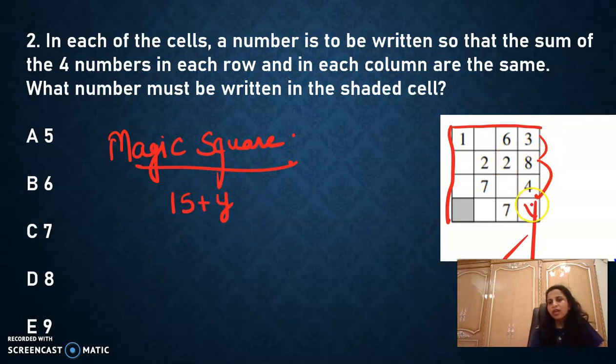It is a magic square type of thing, but they have not given the sum. So let's put a y here and we'll try to crack the question. So you see 8 plus 4, 12 and 15. So sum could be what? 15 plus y, right? So my sum is 15 plus y. So I'm going to solve the question so that everywhere the sum will be 15 plus y.